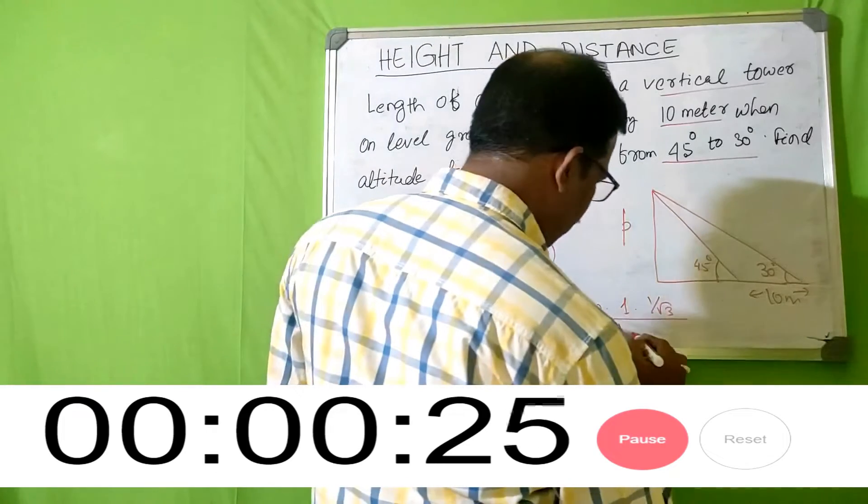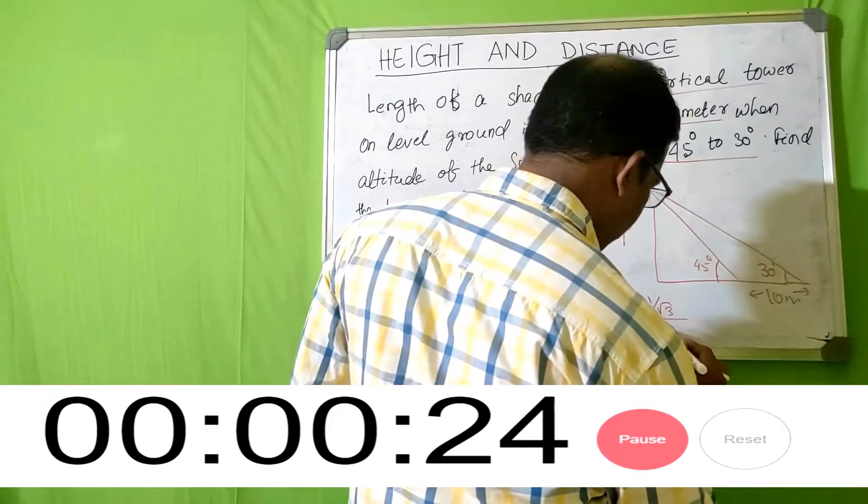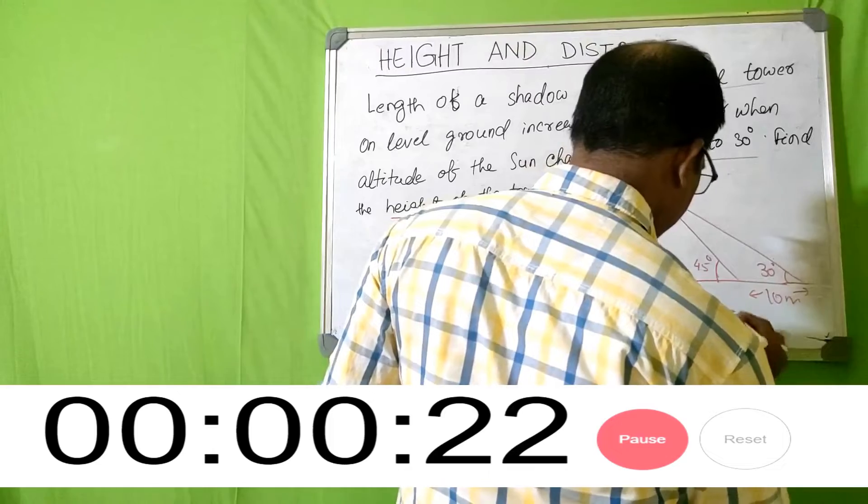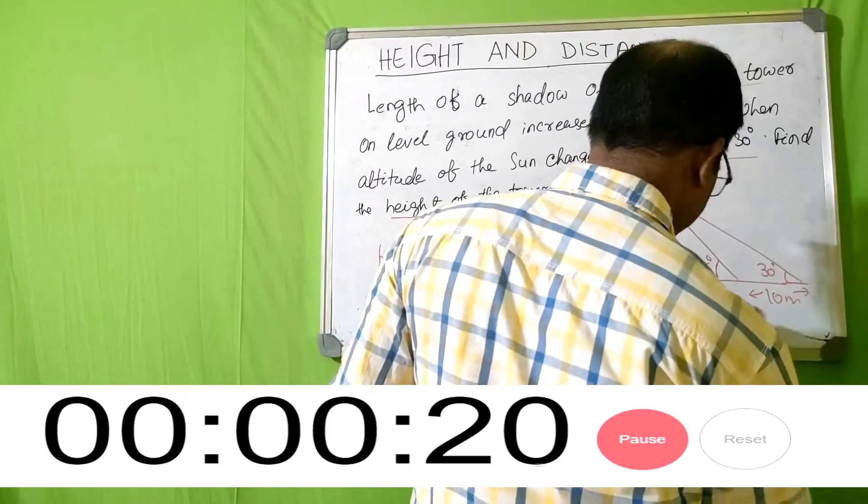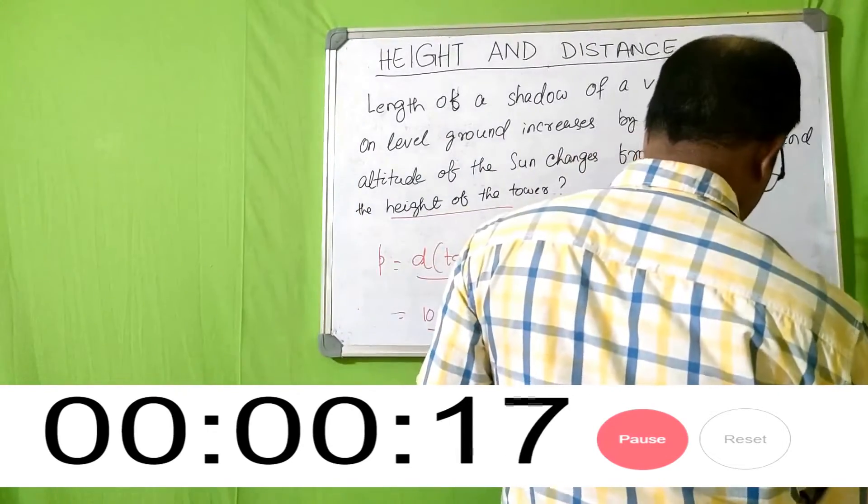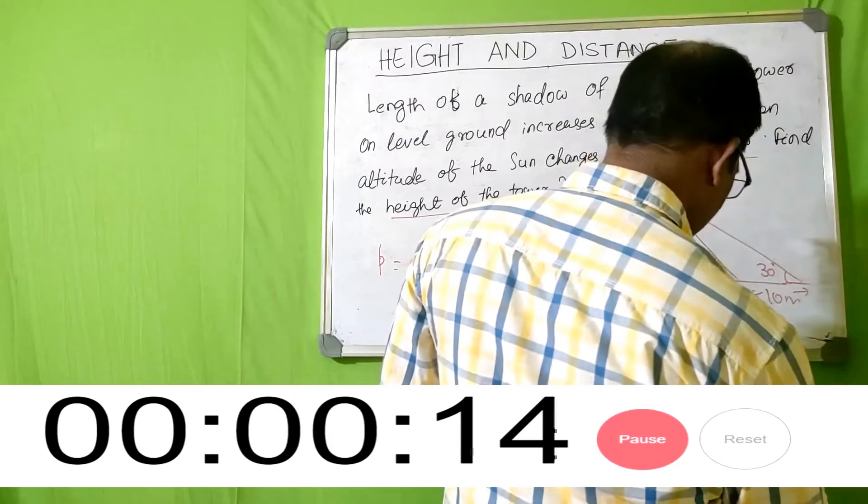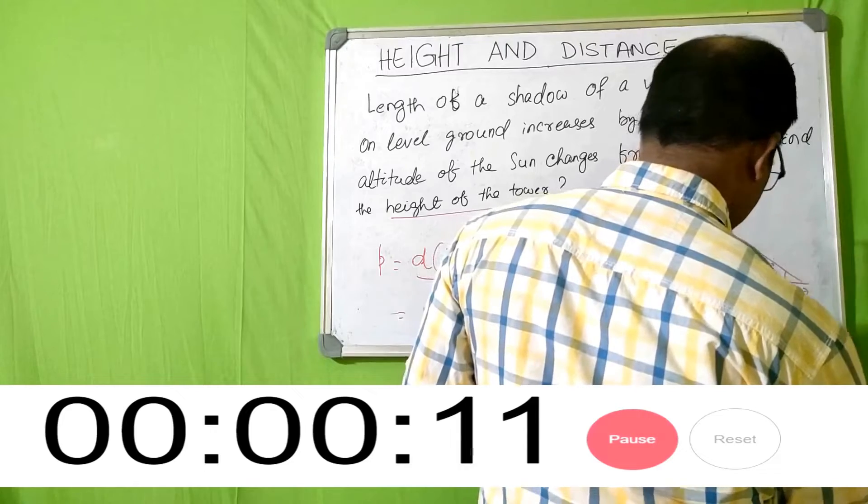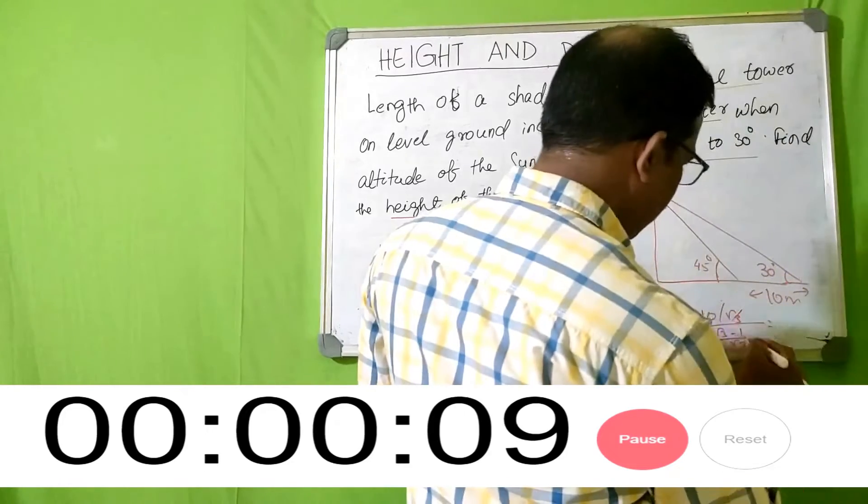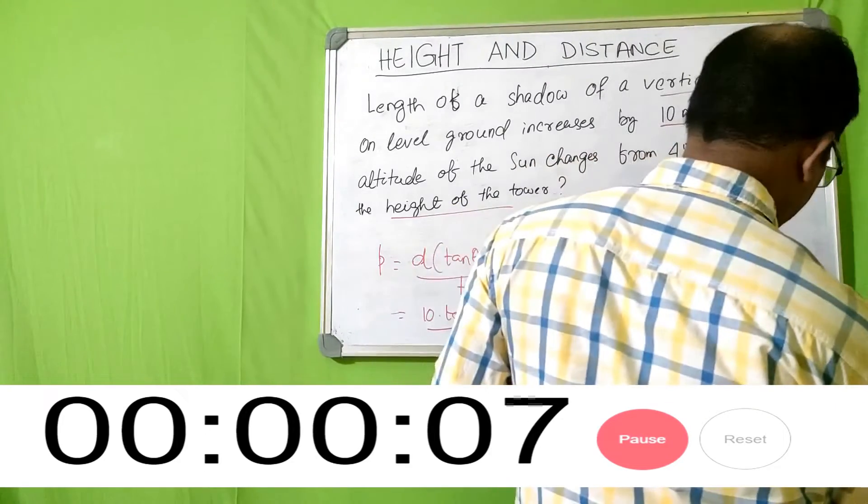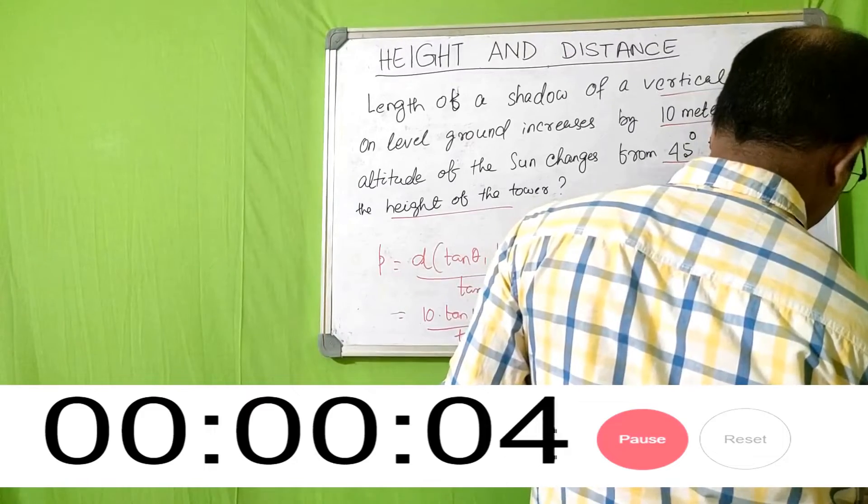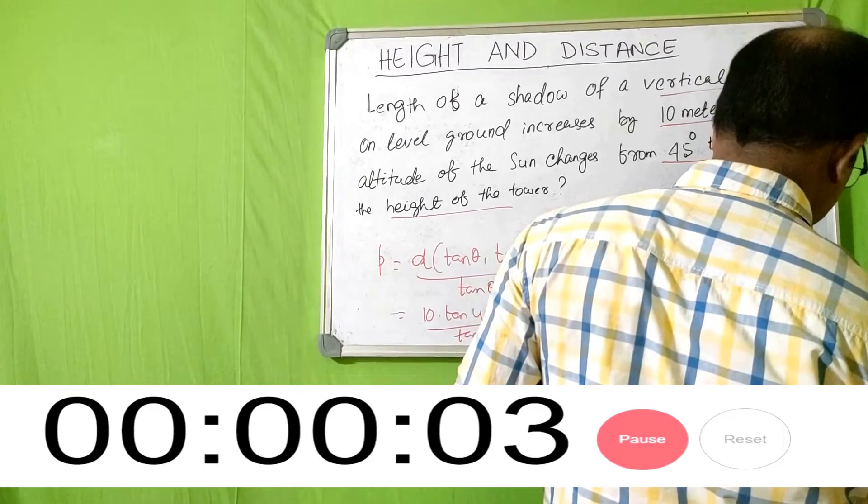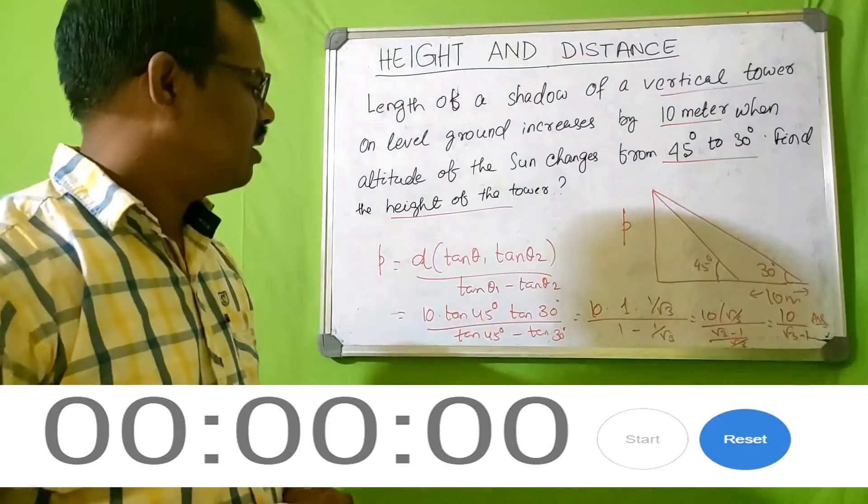Then tan 45 again 1 minus 1 upon root 3, which is equal to 10 by root 3. The numerator and the denominator becomes root 3 minus 1 by root 3, so this will become root 3. So this will be your answer. So easy.